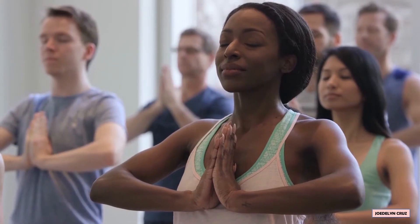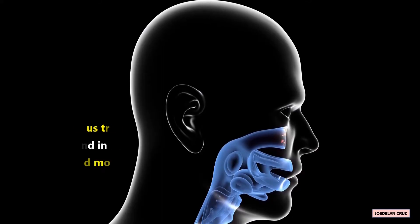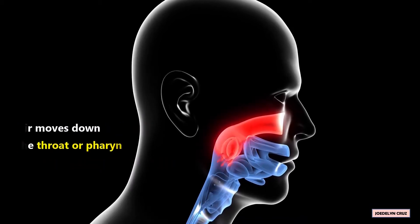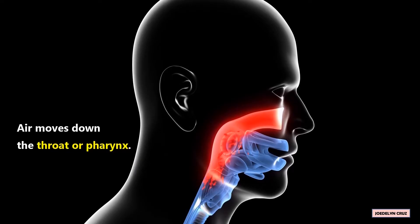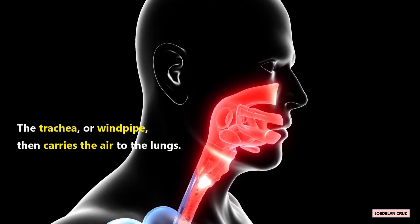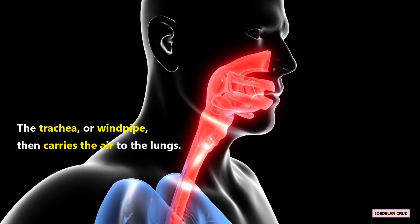When we breathe in, the air enters the nose. Cilia and mucus trap tiny particles found in the air and warm and moisten the air. Air moves down the throat or pharynx. The trachea, or windpipe, then carries the air to the lungs.